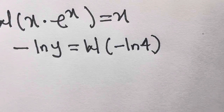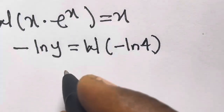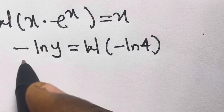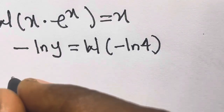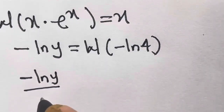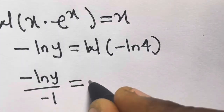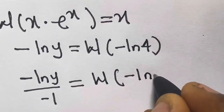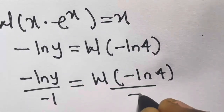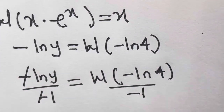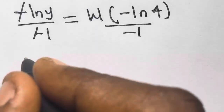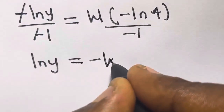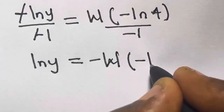So here if we divide both sides by -1 to cancel these minuses, we have minus ln(y) divided by -1 equals W(-ln 4) divided by -1. So we will have ln(y) equals minus W(-ln 4).